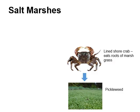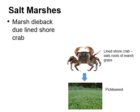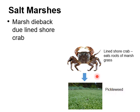Another interesting phenomenon in west coast salt marshes is salt marsh die-back — the marsh disappearing due to lined shore crabs. Unlike fiddler crabs, which help salt marsh plants, lined shore crabs eat the roots of grasses like pickleweed. When the grass loses its roots, it disappears. When there are lots of these crabs, they remove all the pickleweed, leaving nothing to hold the sediment in place, and the salt marsh dies back.